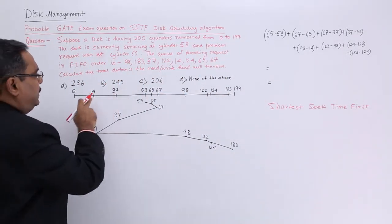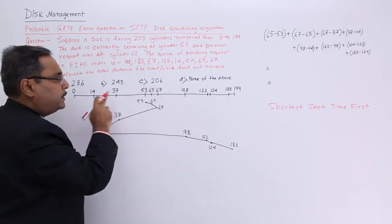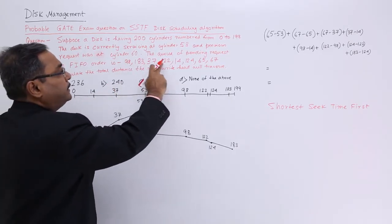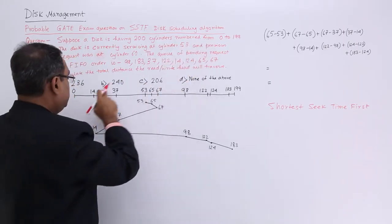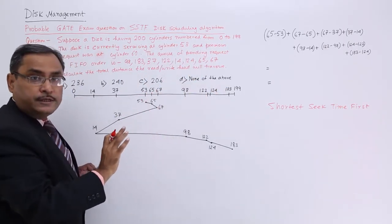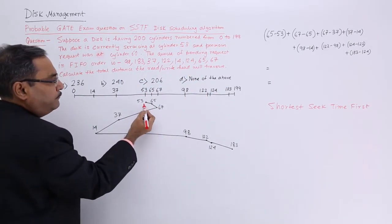Now see, I have written all these cylinder numbers in the ascending order. Whatever they were here, 0 to 199 obviously. Now I will be starting from 53.